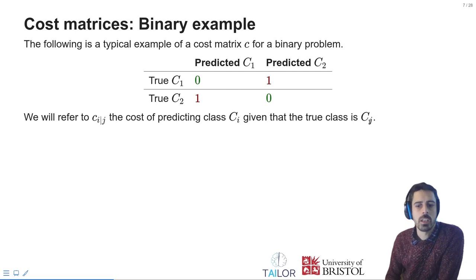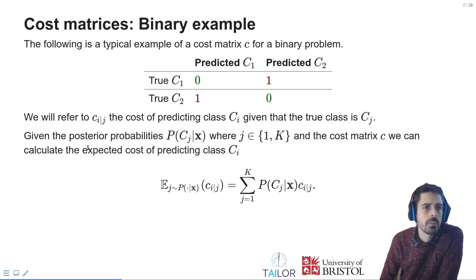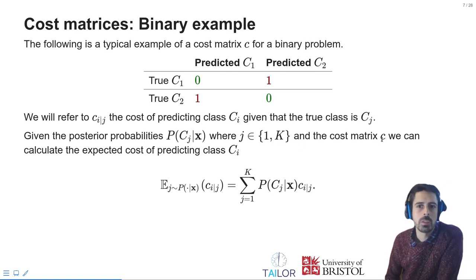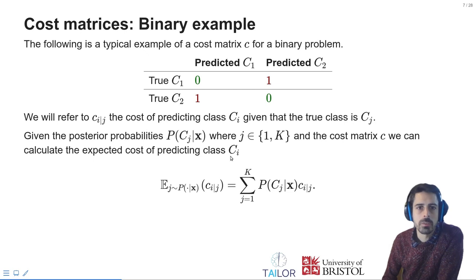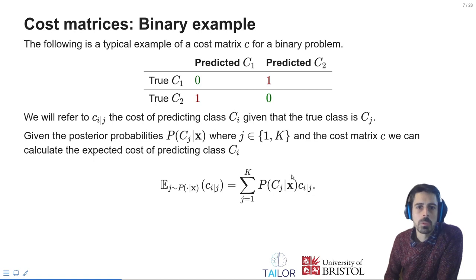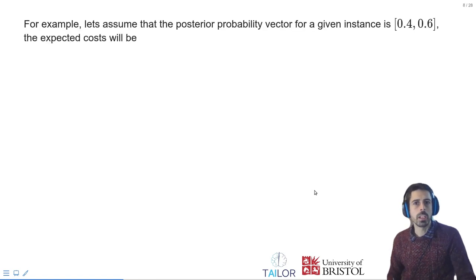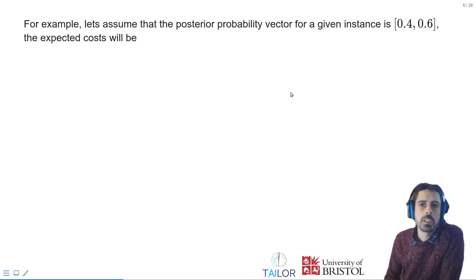If we have the posterior probabilities for each of the possible classes and access to the cost matrix, we can calculate the expected cost of making a prediction for one particular class. For class y, this is done by marginalizing over all possible outcomes — we sum the posterior probabilities for each class, weighting each of the costs from the cost matrix of making prediction y given that the true class is j.